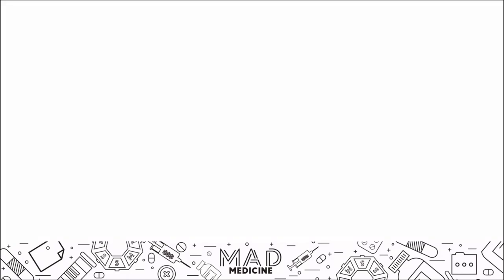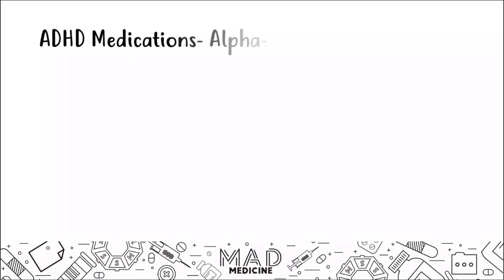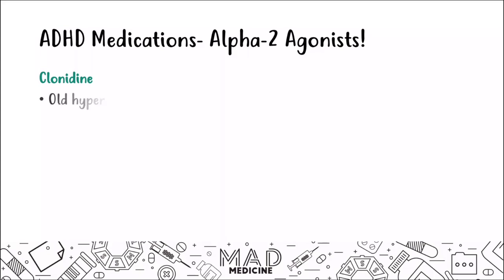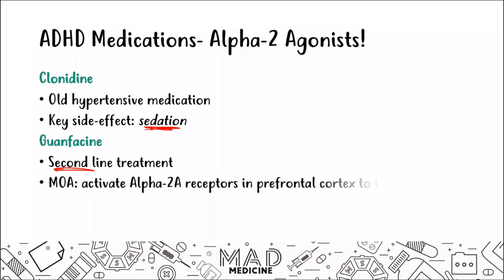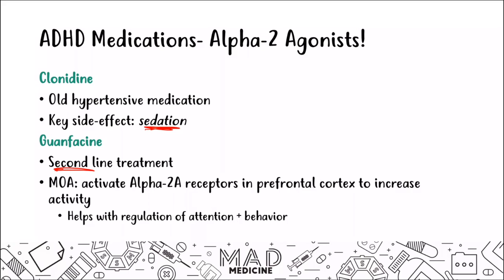Finally, the last classification of ADHD medications are the alpha-2 agonists. There are two main drugs in this class. The first one is clonidine, which is an old antihypertensive medication — the key thing to understand is that it has very high rates of sedation, so this is not something you want to prescribe without considering the side effect. You also have guanfacine, which is a second-line treatment. Its mechanism of action is that it activates alpha-2 receptors in the prefrontal cortex to increase brain activity, which helps with the regulation of attention and behavior.